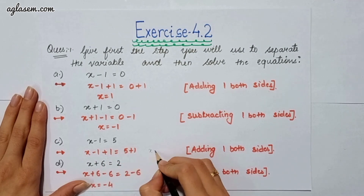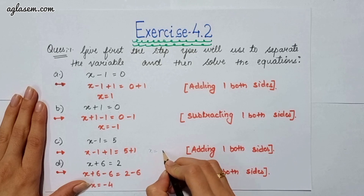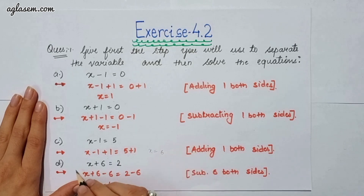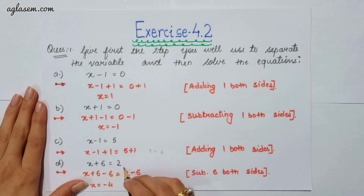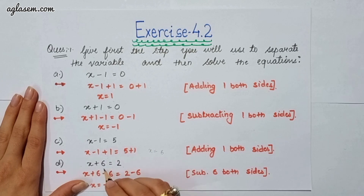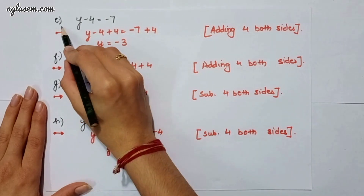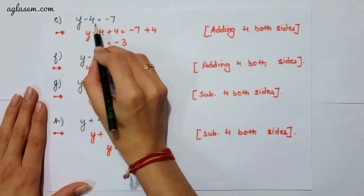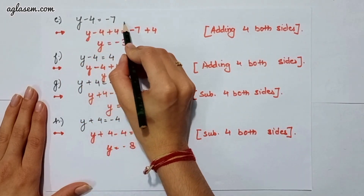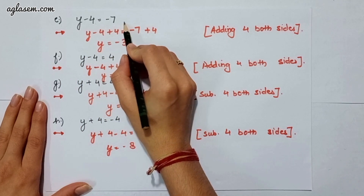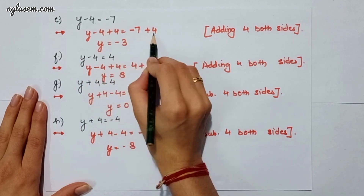The fourth part says x plus 6 is equal to 2. Here we have to subtract 6 on both sides, which will give you x as minus 4. Moving to the fifth part, which says y minus 4 is equal to minus 7. Here we have to add 4 on both sides.